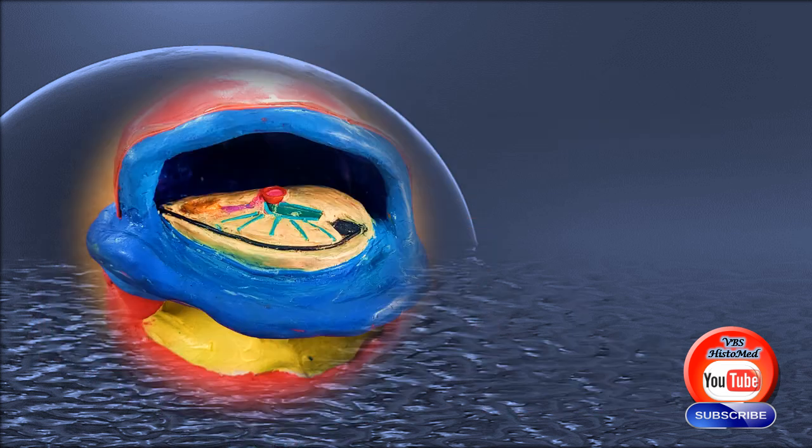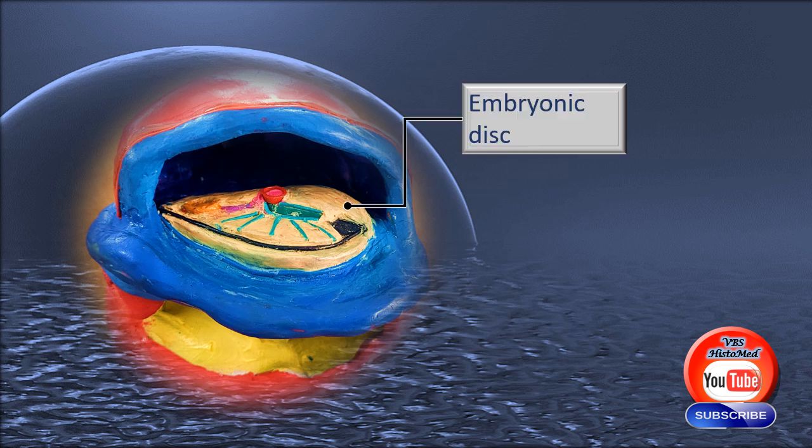This is a diagrammatic section of the embryo, the interior of the developing embryo roughly around this stage. The main item here is the embryonic disc. This is the embryonic disc, then the amniotic cavity, amniotic sac, and lower down the yolk sac.